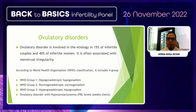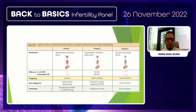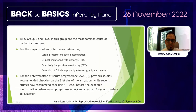Ovulatory disorders affect 15–40% of infertile women and are associated with menstrual irregularity. We use the WHO classification into groups. We must check prolactin levels first, as hyperprolactinemia can be a reason for ovulatory disorder. The most common group is WHO Group II (normogonadotropic normoestrogenic ovulation disorders), which is treated most often with clomiphene citrate.